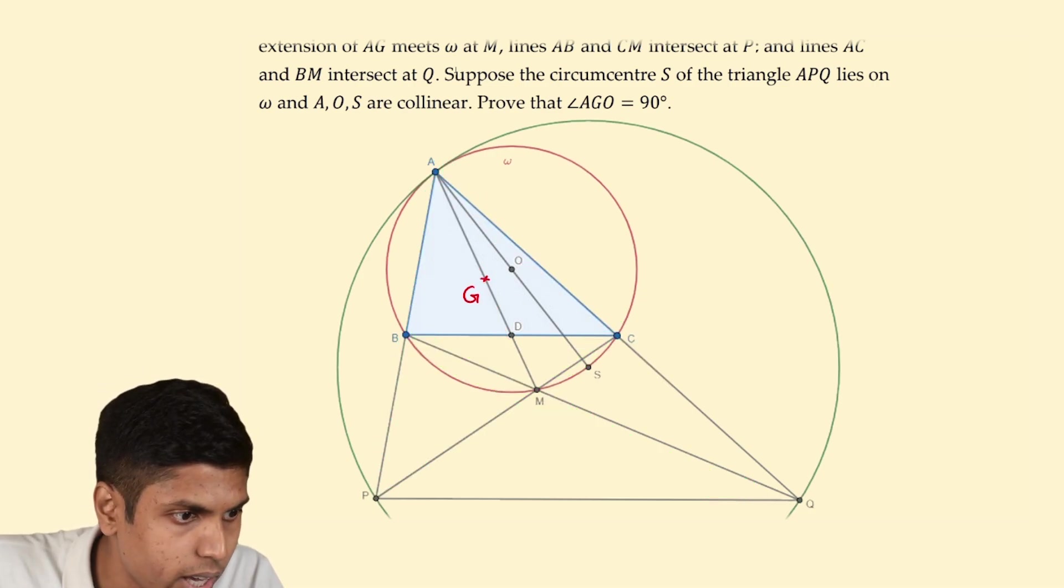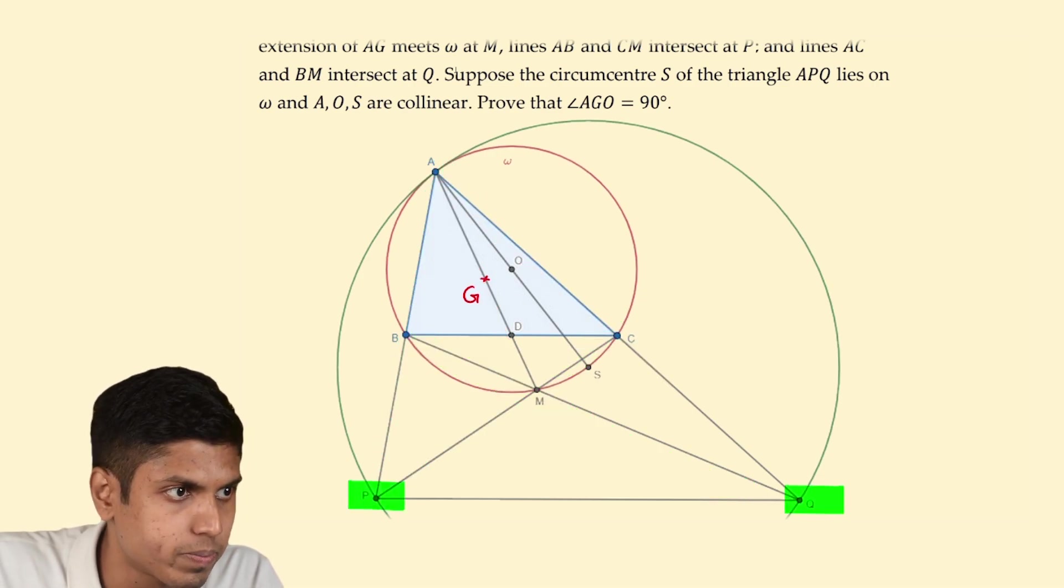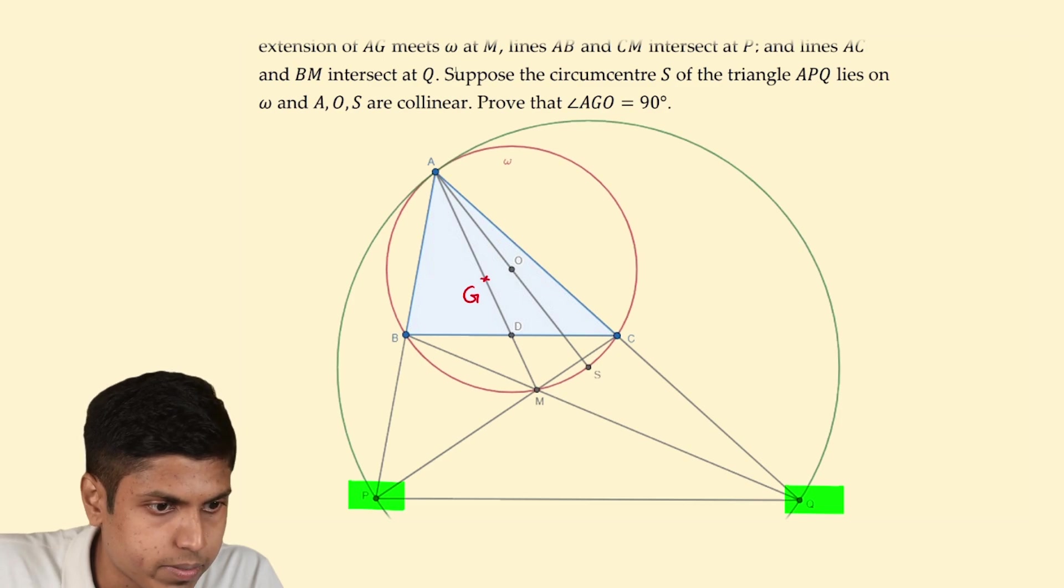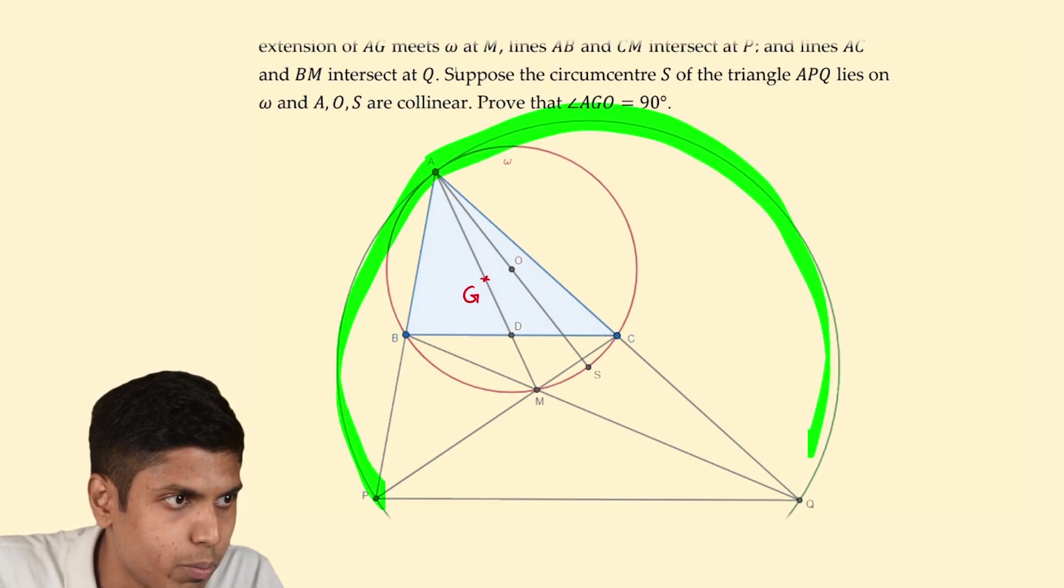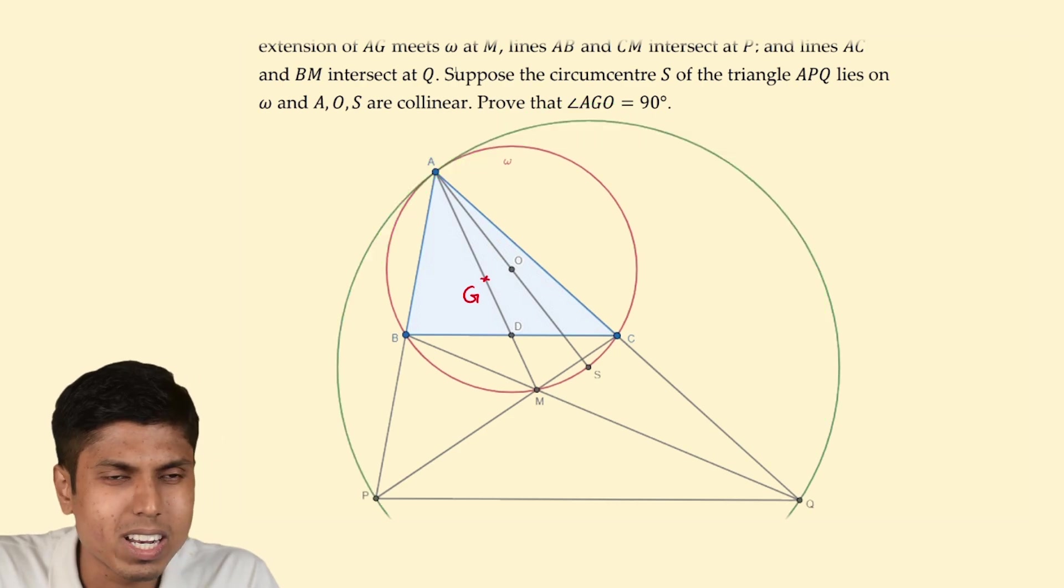This is the point P and this is the point Q and then we draw the circumcircle of triangle APQ. Though it's not necessary, let's just draw that.